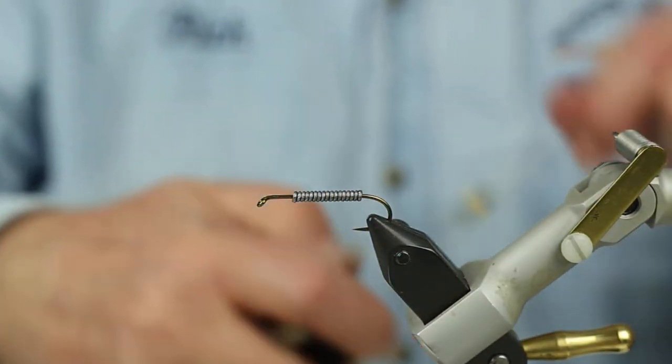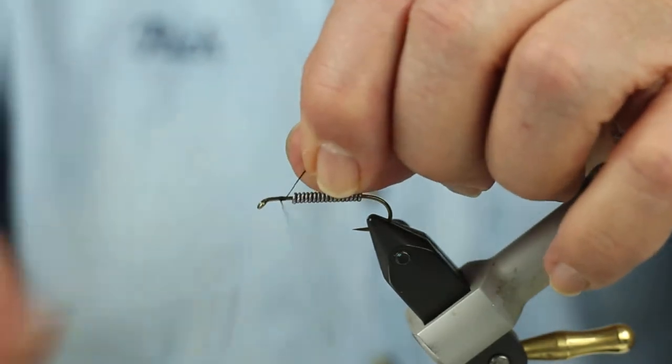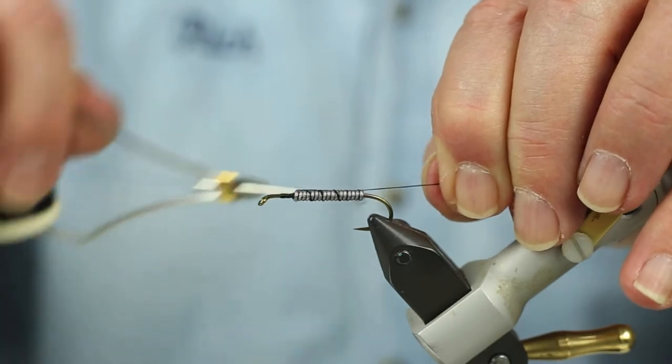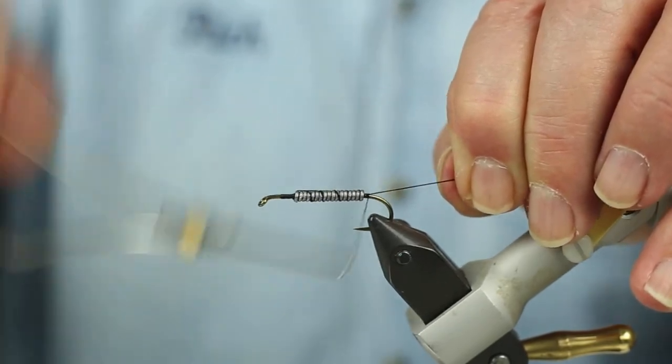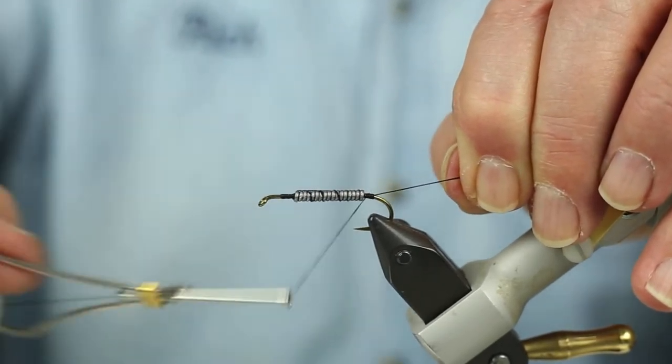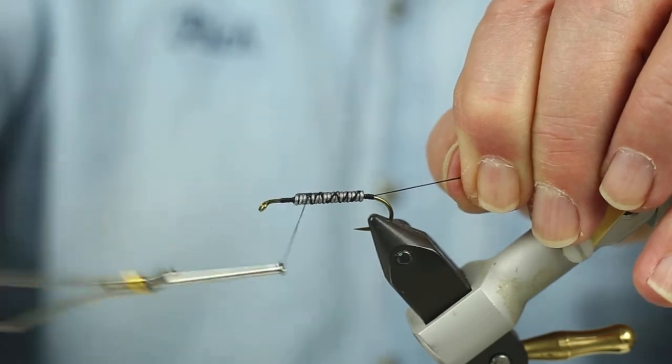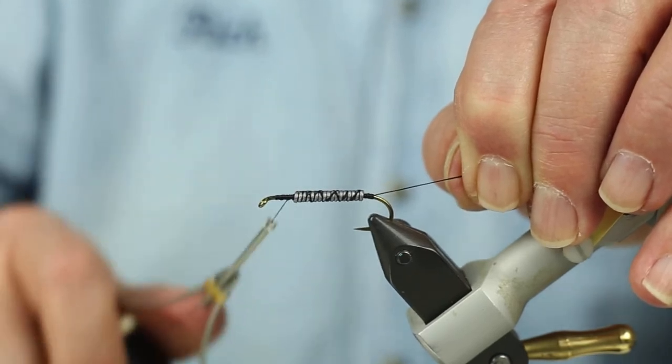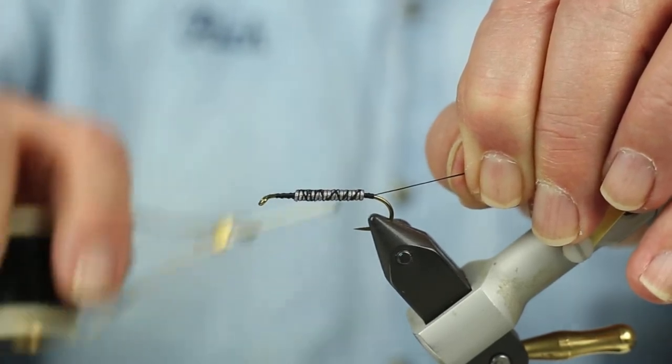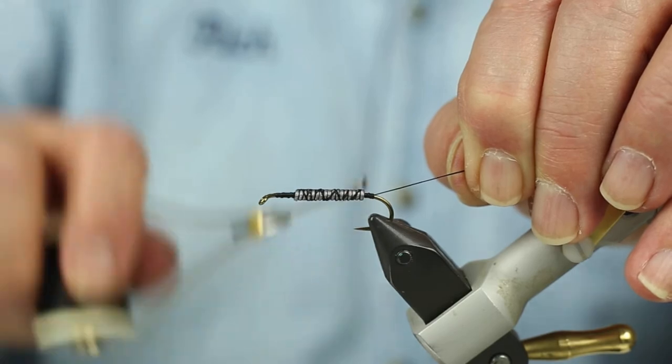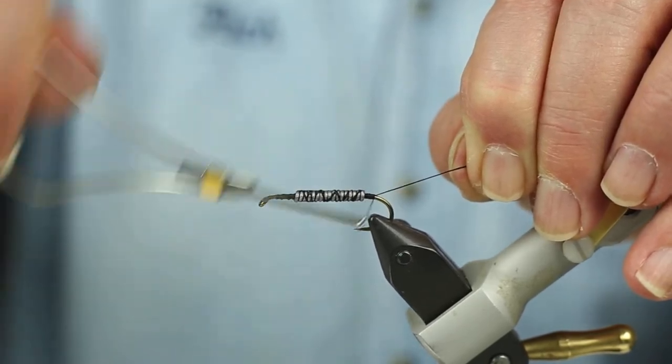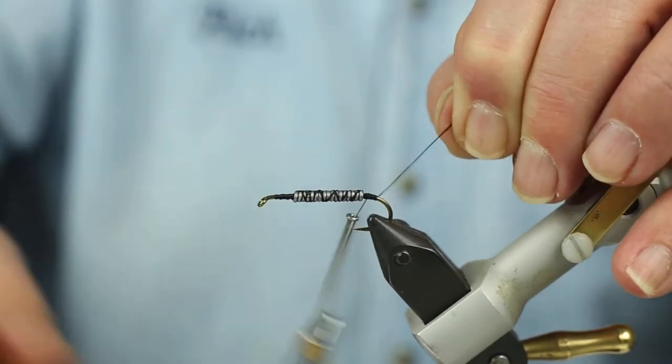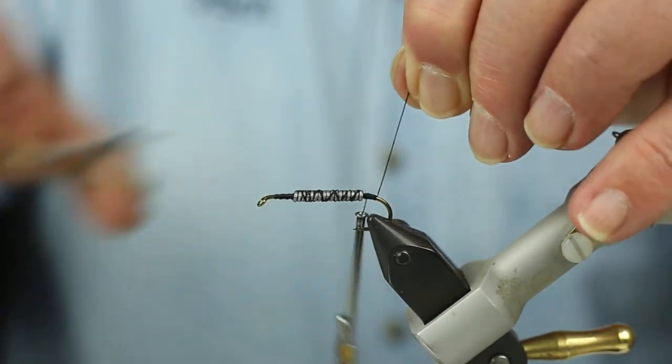Now I'm going to start with the thread. I'm going to lock this lead weight in and cover it up somewhat. I need to get back to where I'm going to put the tail in. I'm going to run another layer up over the lead weight. I don't like it to spin around.